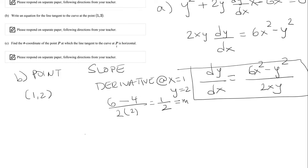And now I can find the equation of the tangent line. So we have y - 2 equals the slope, 1/2, multiplied by (x - 1). And if you want to simplify, you get y = (1/2)x + 3/2.